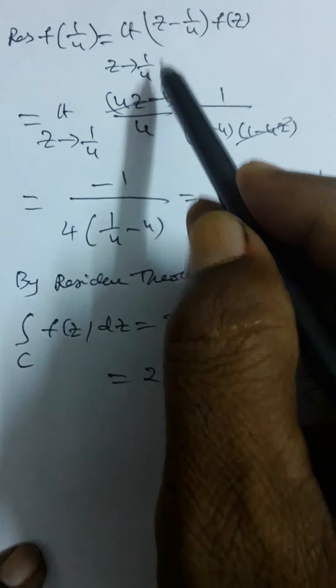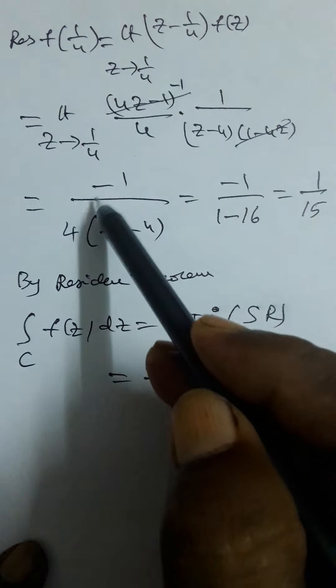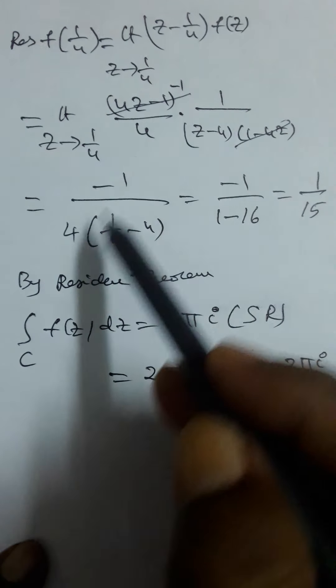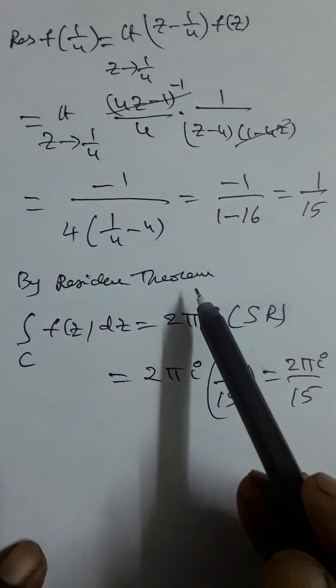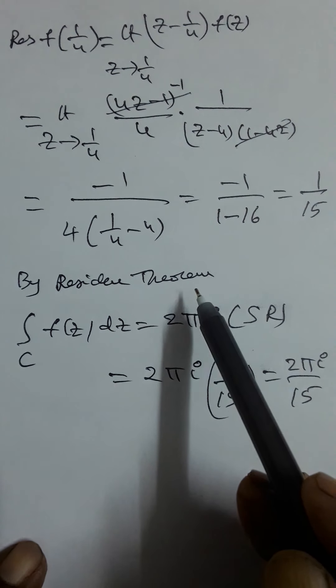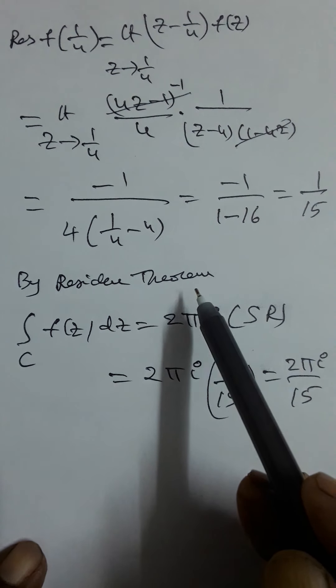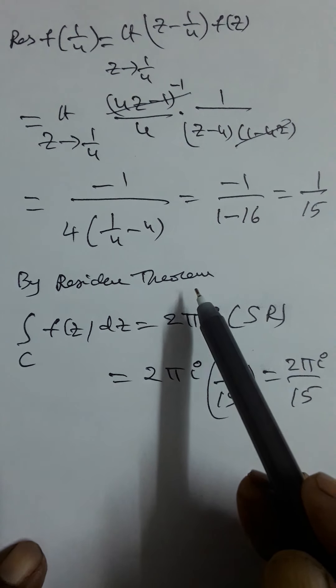Residue at z = 1/4: using the simple pole formula, limit as z → 1/4 of (z − 1/4)·f(z). Writing (z − 1/4) = (4z − 1)/4, the (4z − 1) factor cancels with (1 − 4z) = −(4z − 1), giving −1/(z − 4). Putting z = 1/4: −1/(1/4 − 4) = −1/(−15/4) = 1/15. By the residue theorem, the integral over C of f(z) dz = 2πi · (1/15) = 2πi/15.